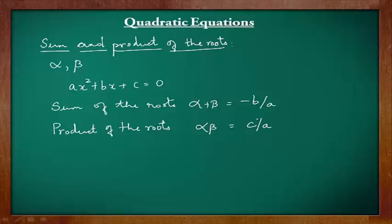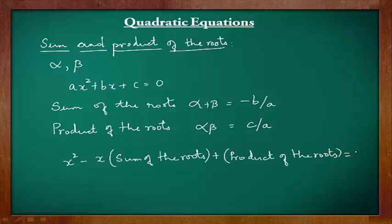Therefore, if you know the sum and product of the roots, the quadratic equation can be formed as: x² - (sum of roots)x + (product of roots) = 0, or equivalently x² - (alpha + beta)x + alpha·beta = 0.